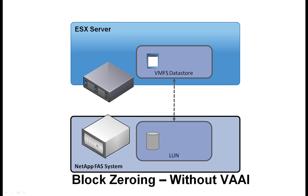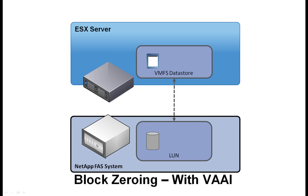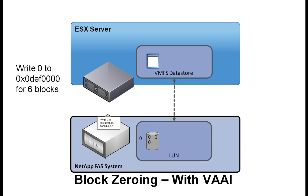Block zeroing is used to ensure virtual disks do not contain stale or old data. In some cases, for example VMware fault tolerance, it also ensures blocks are fully provisioned. Without VAAI, when ESX needs to zero many blocks, each block is explicitly written from the server to storage, consuming CPU and network resources. With vSphere 4.1, ESX tells the VAAI-enabled NetApp storage system to write a pattern of zeros to a large set of sequential blocks. The value is it accelerates creation of zeroed VMDKs by up to 10 times and reduces the impact on the server and network.